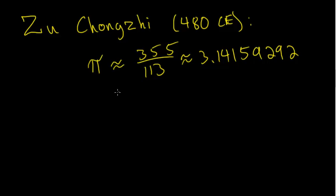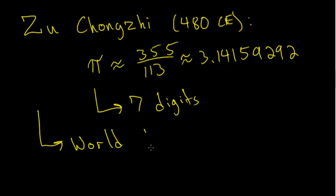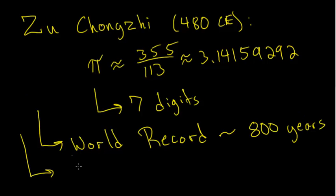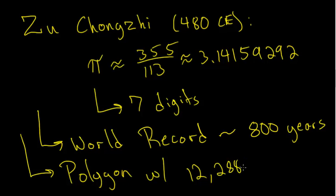You can notice that this value of pi is accurate to seven digits. This value stood as the world record for nearly 800 years. Zu found this result by using a regular polygon with 12,288 sides.